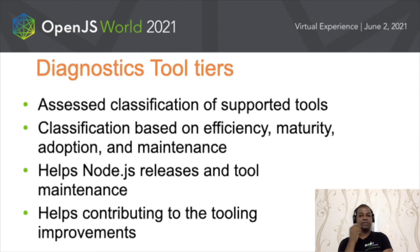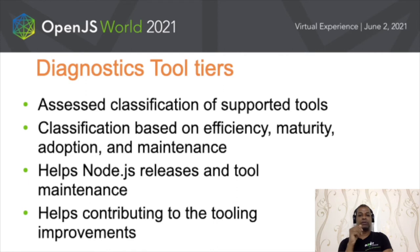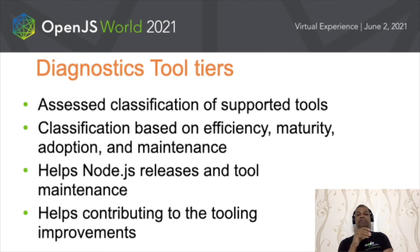This classification helps in two ways. First, it helps release teams understand where each tool resides in terms of stability and take calculated decisions around inclusion in releases based on the long-term support strategy. Second, it helps contributors understand which tools reside in which state across various value parameters and where to apply focus for maximum value addition. We constantly review the list and state of tiers of various diagnostic tools and make amendments based on perceived changes in any of these parameters.